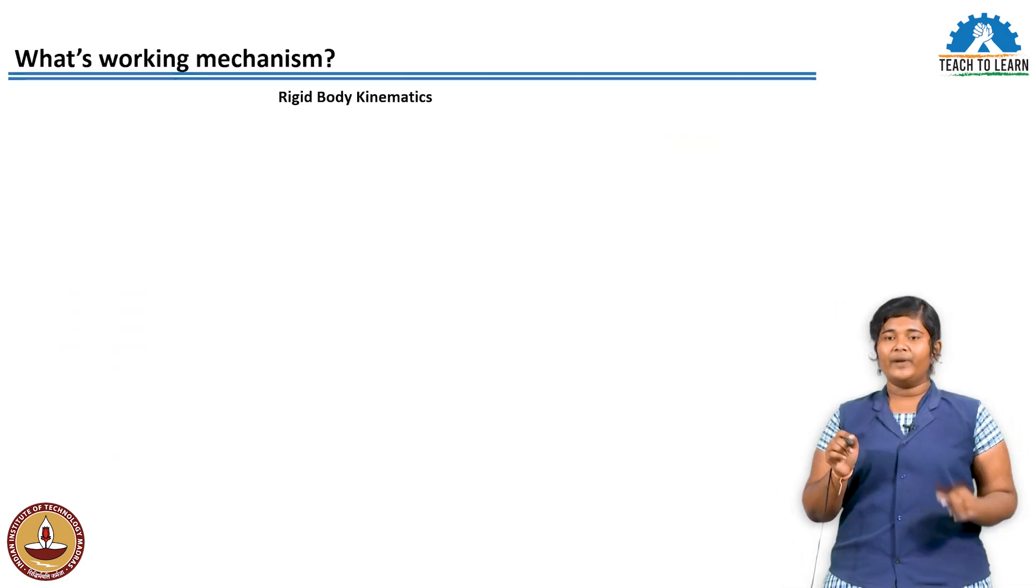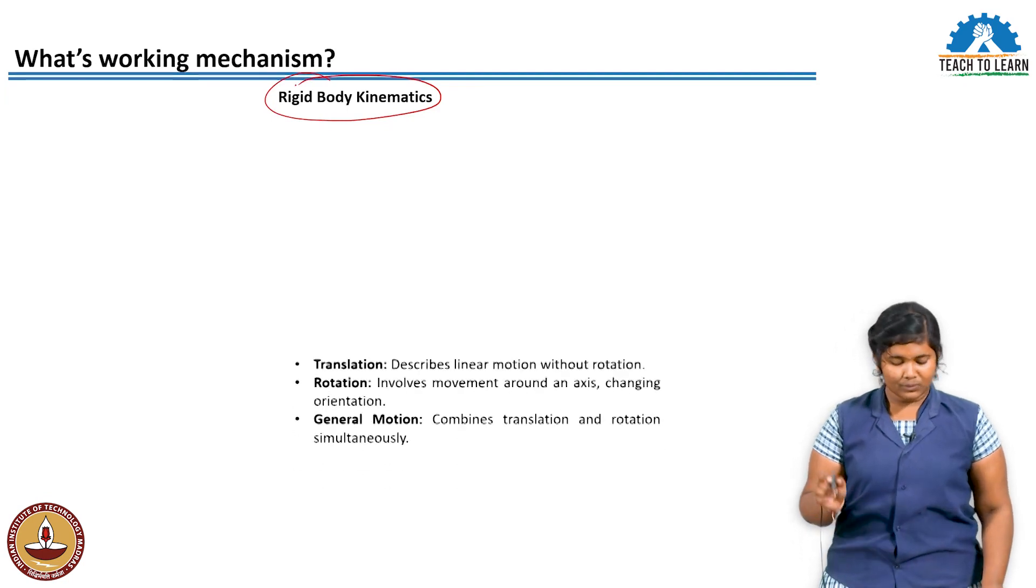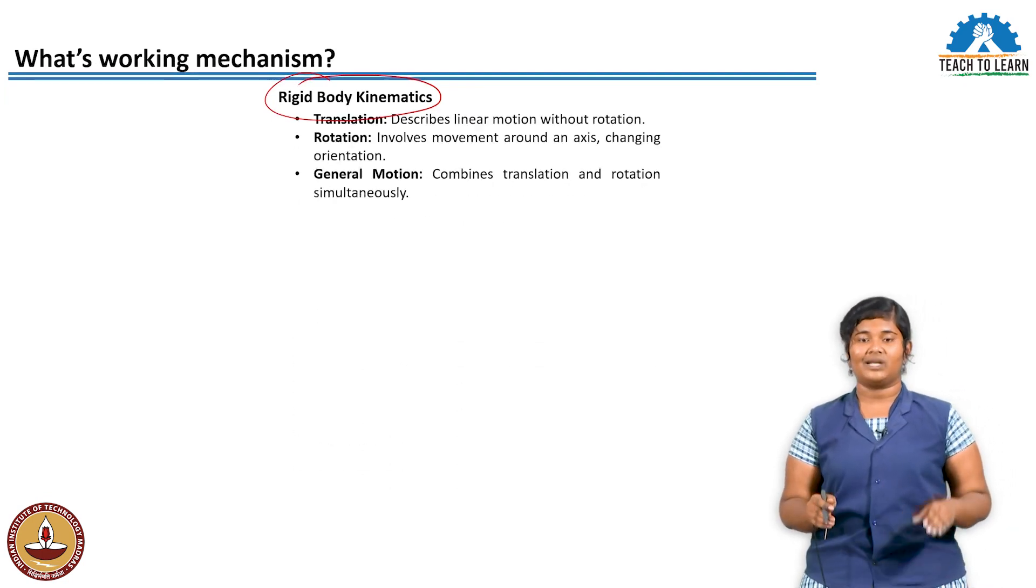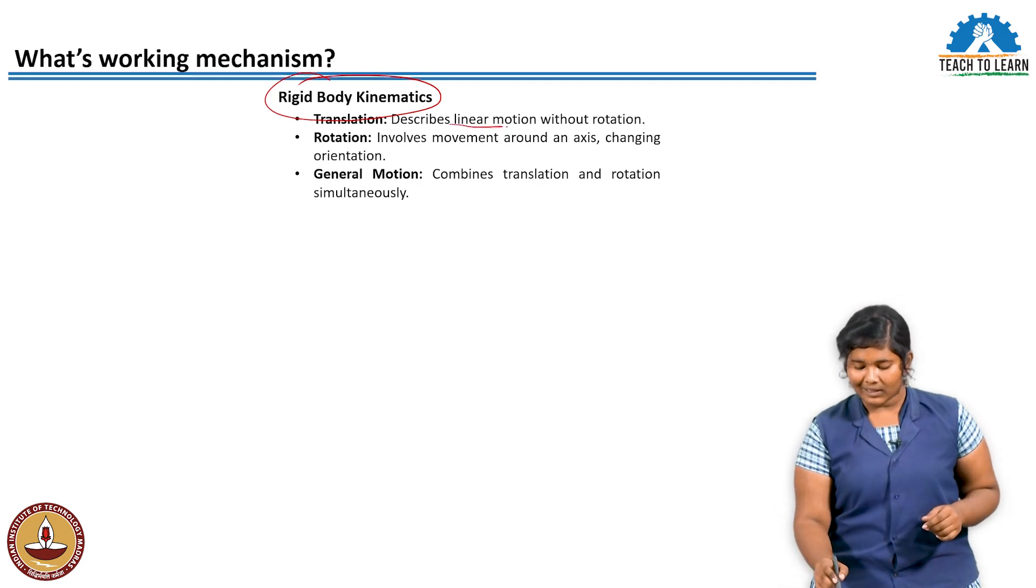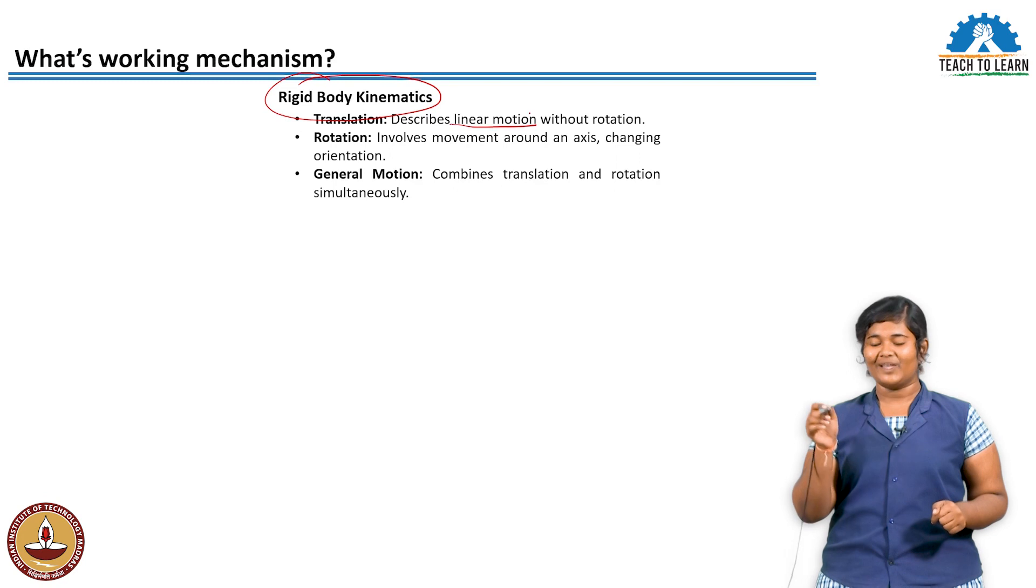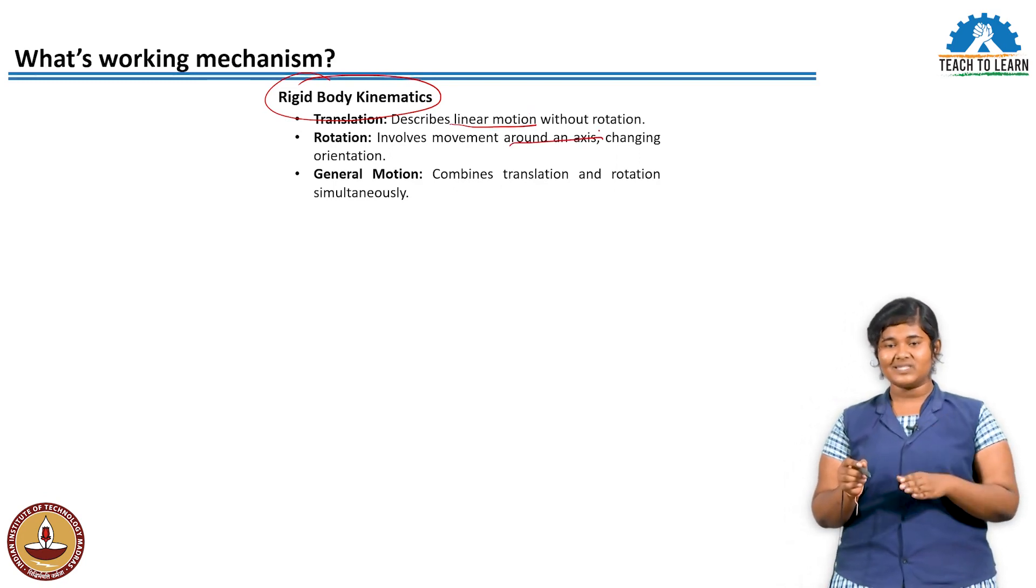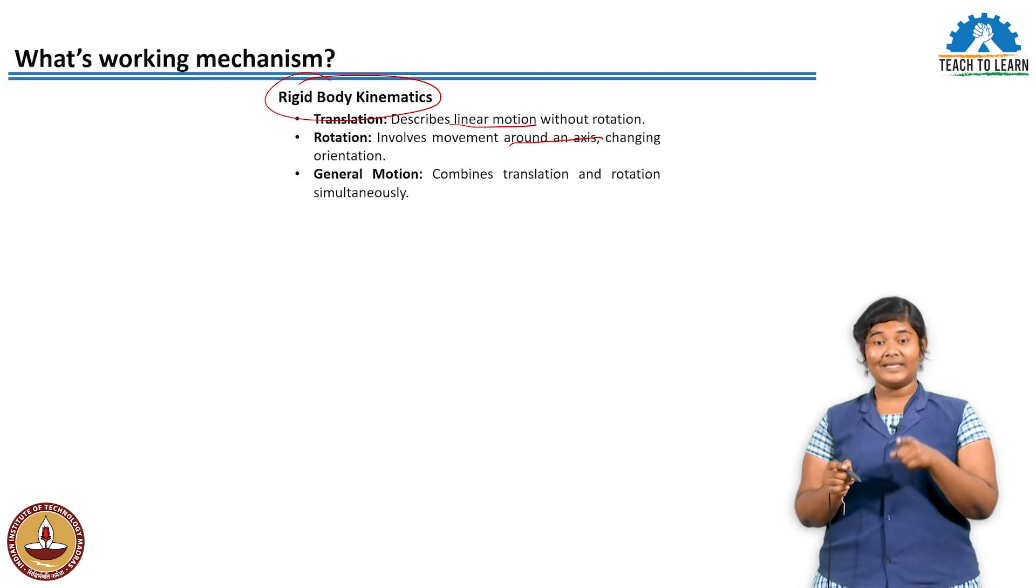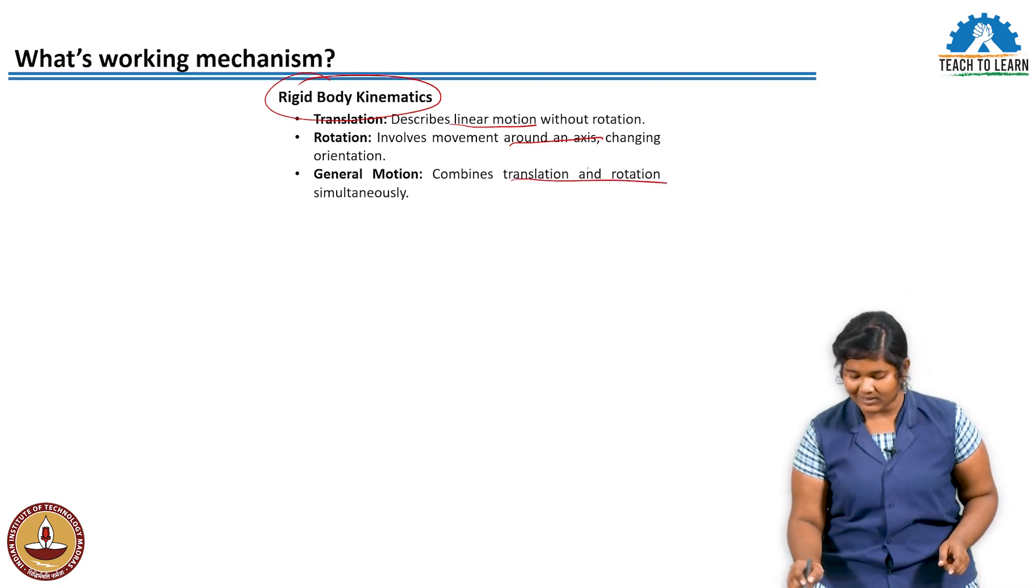The grabber uses rigid body kinematics, which has three forms: translation, where the object has linear motion; rotation, where it rotates about an axis; and general motion, which is translation motion plus rotational motion combined.